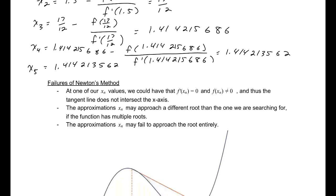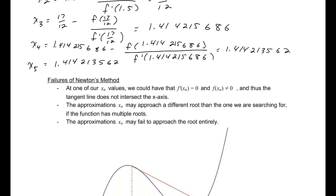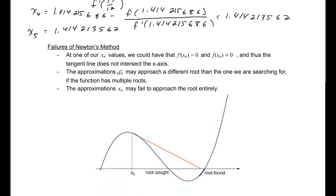There are a few downsides to Newton's method. One downside is that potentially at one of our xₙ values we could have that the derivative is zero but the function is not, so we have a tangent line that is horizontal and thus not going to intersect the x-axis. We could also have the approximations approach a different root. And the approximations may fail to approach the root entirely — they may just bounce back and forth based on what the tangent lines look like. So it works very well for a lot of functions, however occasionally it does not.